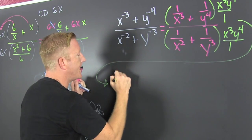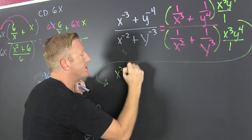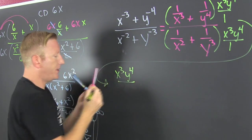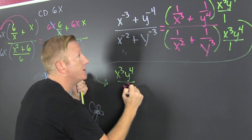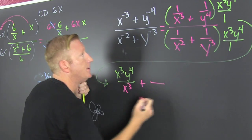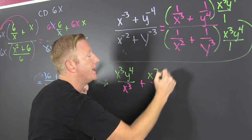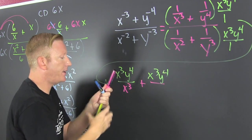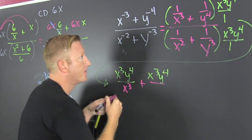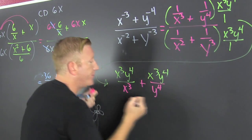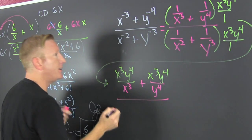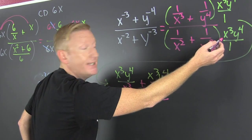So then that's x to the third y to the fourth over that x to the third plus x to the third y to the fourth over y to the fourth.